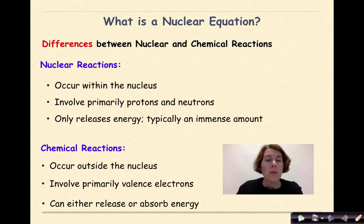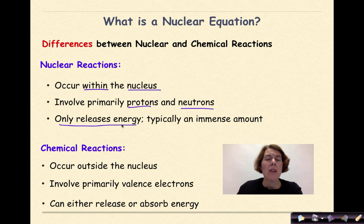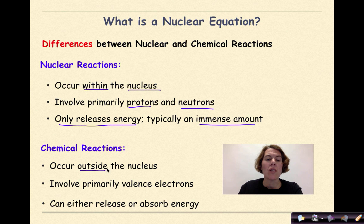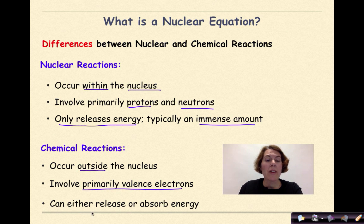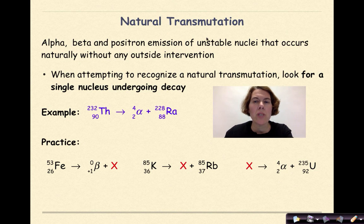There are some differences between nuclear and chemical reactions. In a nuclear reaction, it only occurs within the nucleus, involves primarily protons and neutrons, and releases energy — typically an immense amount. Chemical reactions, on the other hand, occur outside the nucleus, involve primarily valence electrons (the electrons in the outermost shell), and can either release or absorb energy depending on the compounds involved.